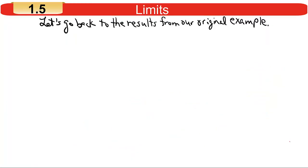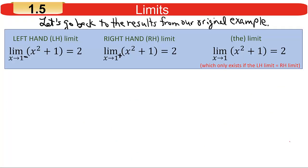Going back to our original example: we found the left-hand limit was 2 and the right-hand limit was 2, so the overall limit is 2. That happens when the left and right-hand limits are equal to each other.